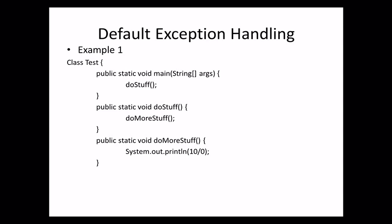If the main method also doesn't contain handling code, JVM terminates main method abnormally and removes the corresponding entry from the stack. Then JVM hands over responsibility of exception handling to the default exception handler, which is also part of JVM. The default exception handler prints exception information in the following format and terminates the program: 'Exception in thread <thread_name>' then the name of the exception, colon, description of that exception, and the stack trace — which covers name, description, and location of the exception.